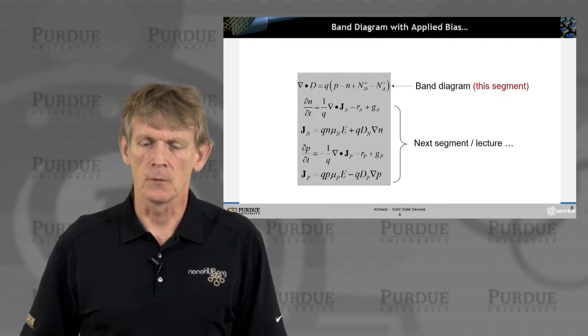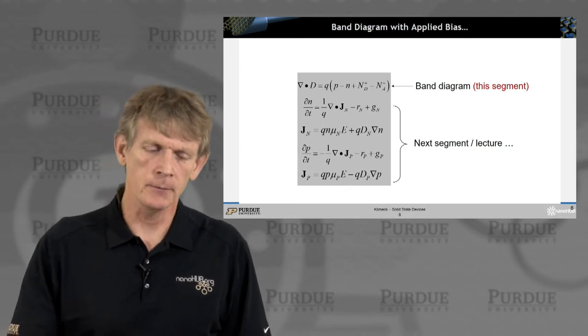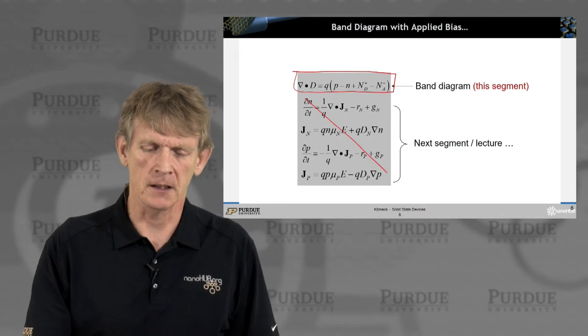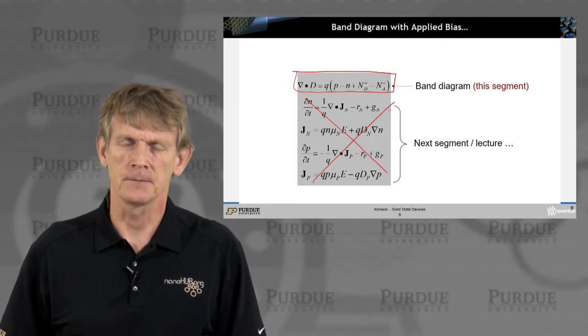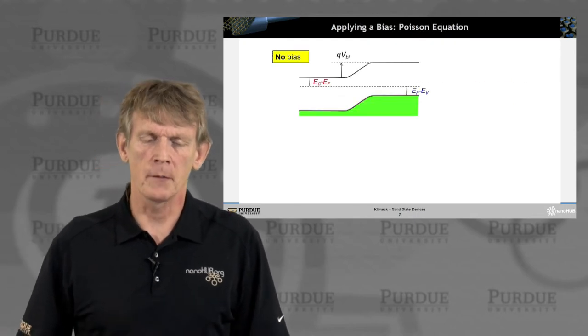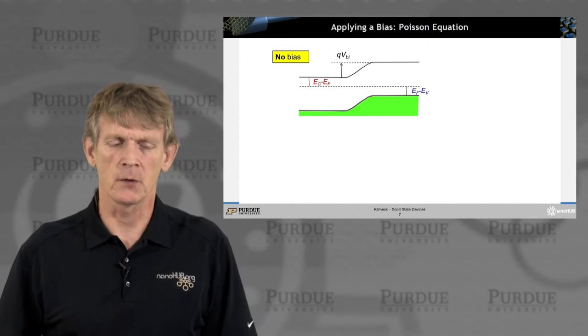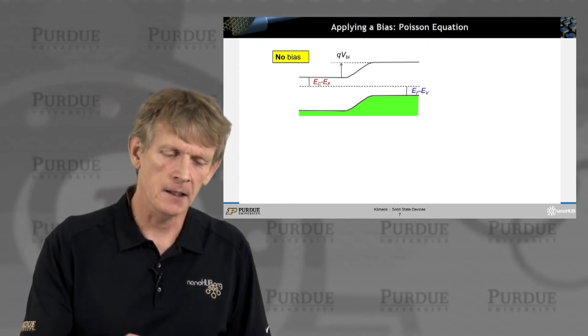So, we'll start out in this segment with a band edge diagram under bias. That's just Poisson equation. And we're not going to cover yet the current flow. We'll do that in the next segment. So, let's draw a band edge diagram. We've drawn one under zero bias before in the last segment. What do we take out of this again?